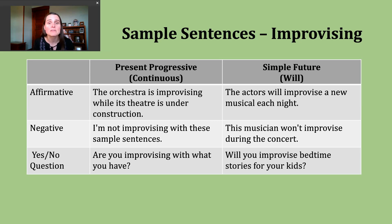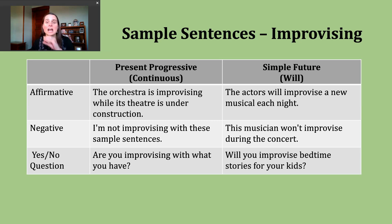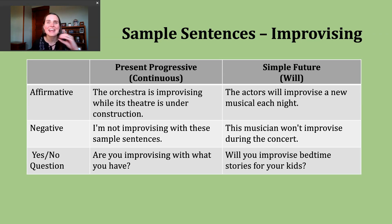When I make present progressive sentences, I have to pay attention to my subject. If my subject is I, the first part of my verb is am, and then the second part is a verb with an -ing ending. If my subject is you, we, or they, I use are and then the -ing form of the verb. Finally, if my subject is he, she, or it, I use is and then the -ing form of my verb.